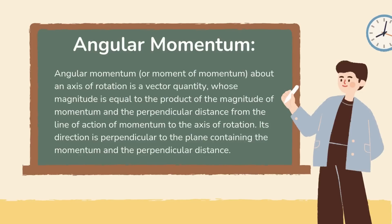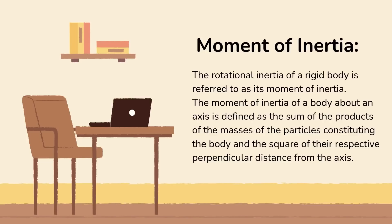Angular momentum about an axis of rotation is a vector quantity whose magnitude is equal to the product of the magnitude of momentum and the perpendicular distance from the line of action of momentum to the axis of rotation. Its direction is perpendicular to the plane containing the momentum and the perpendicular distance.